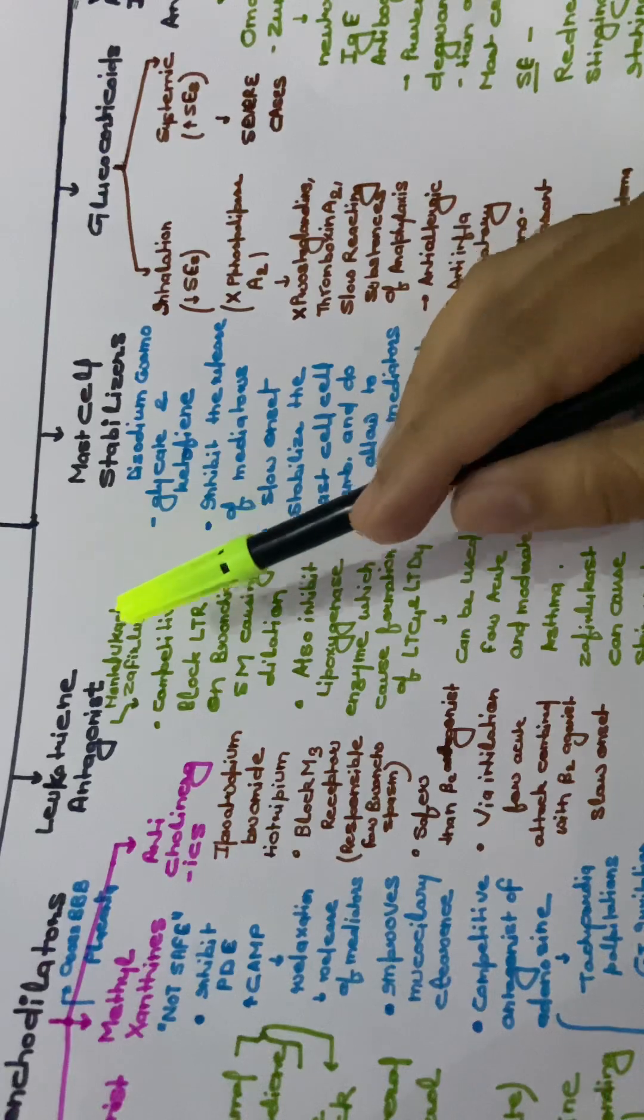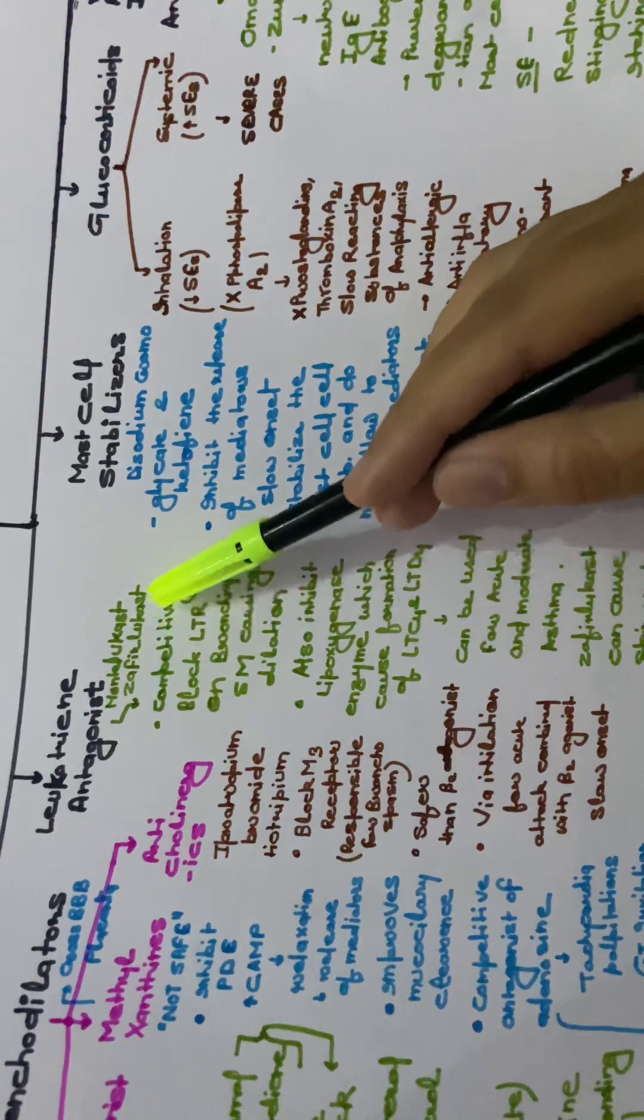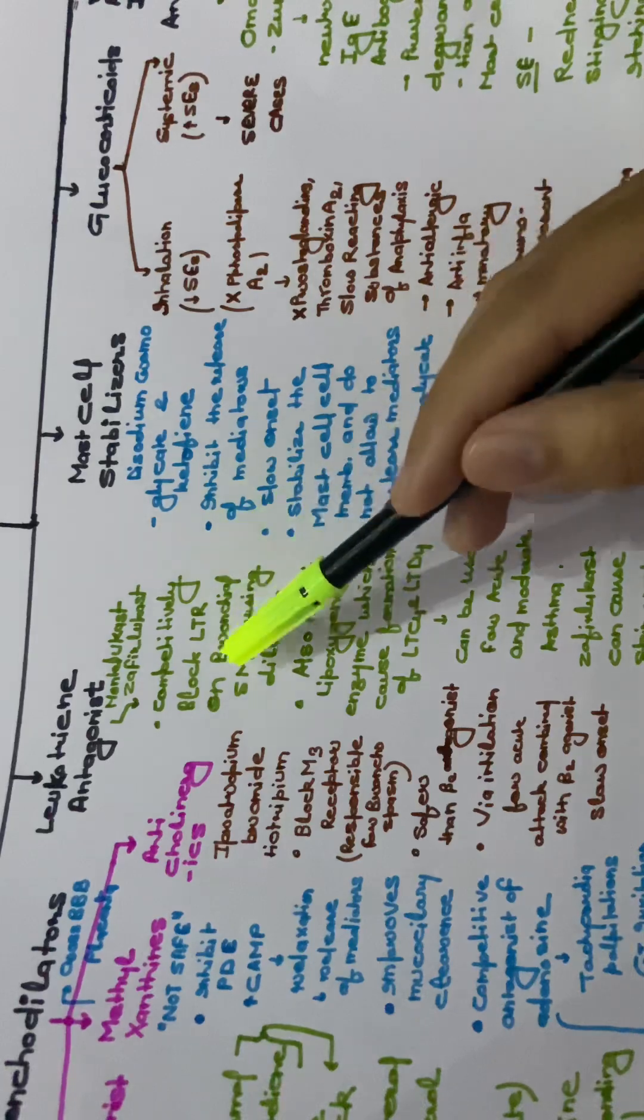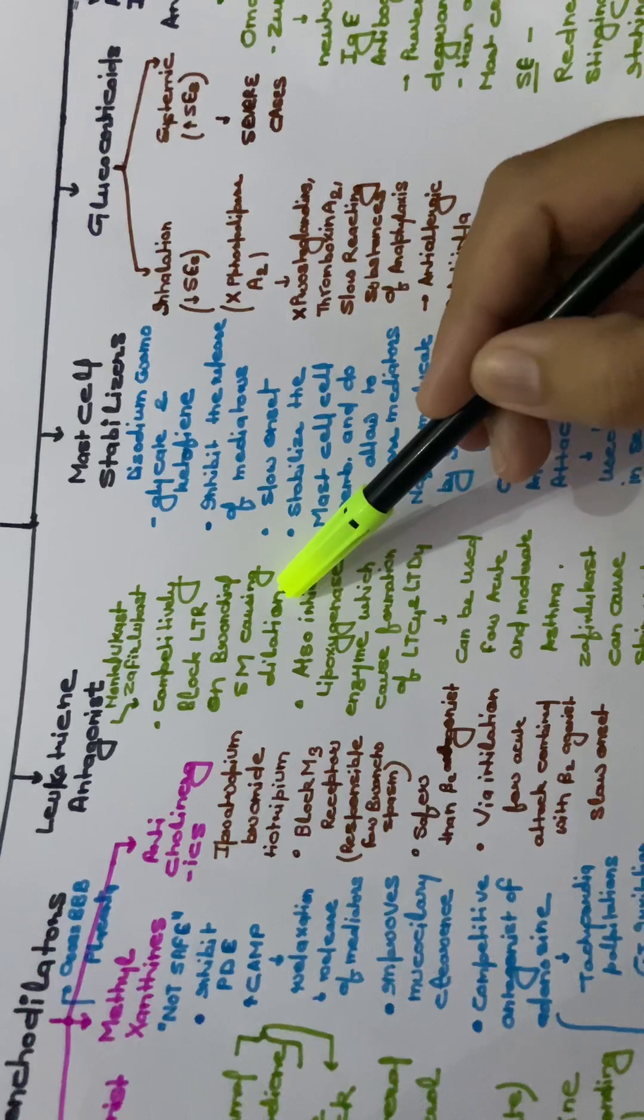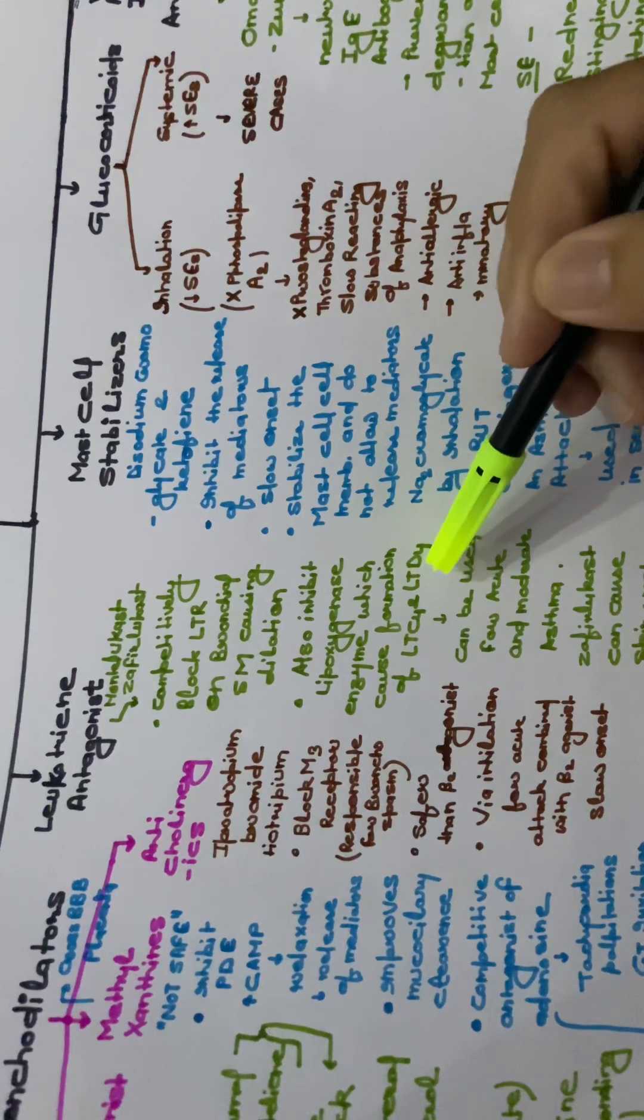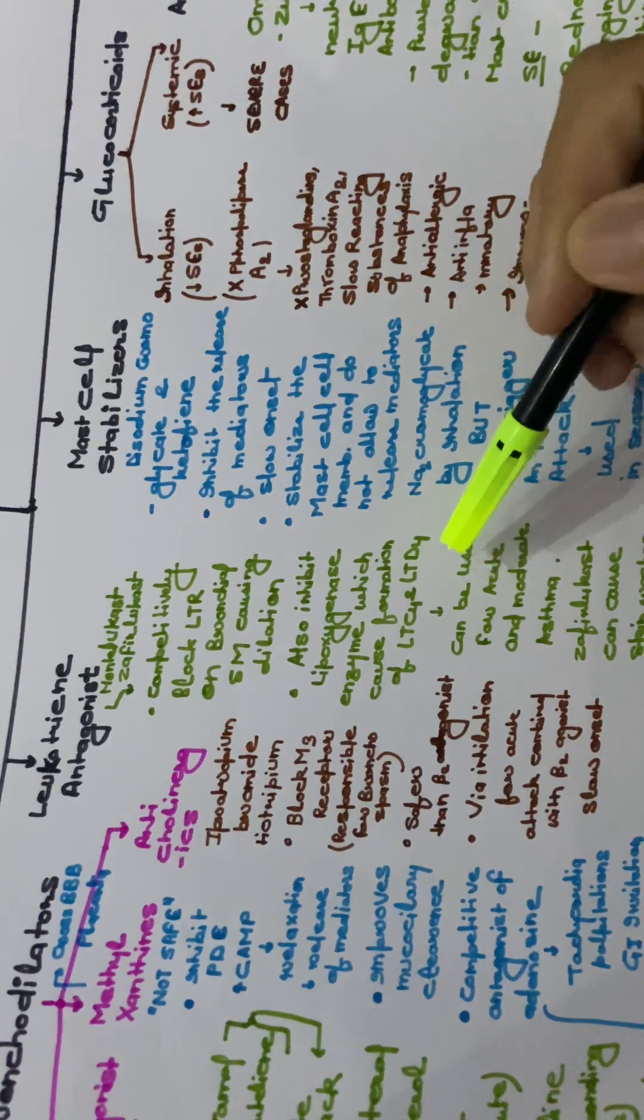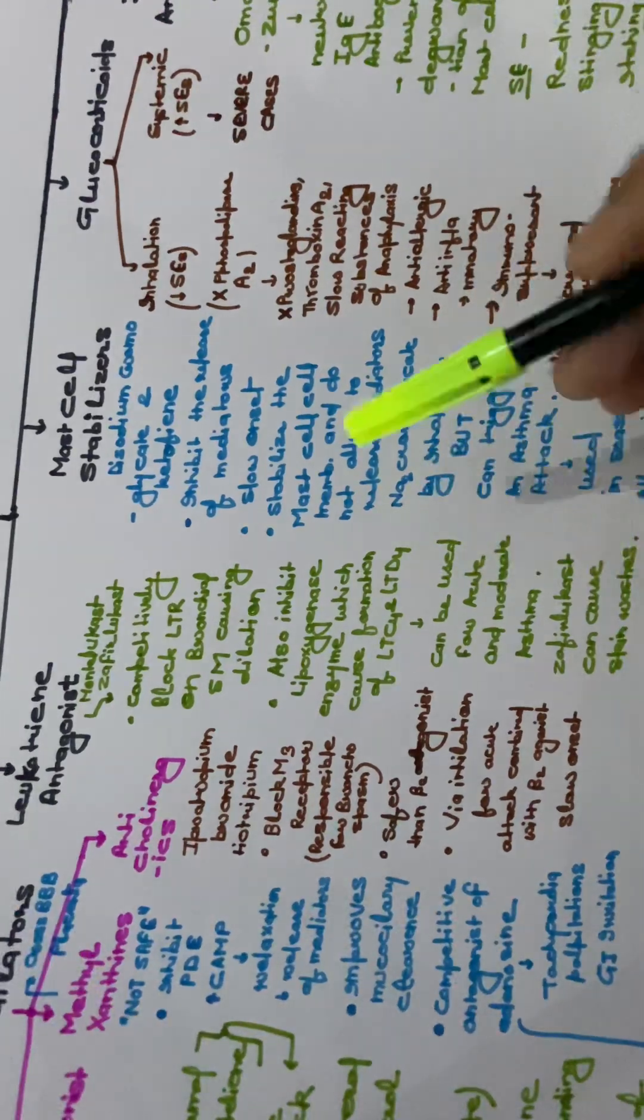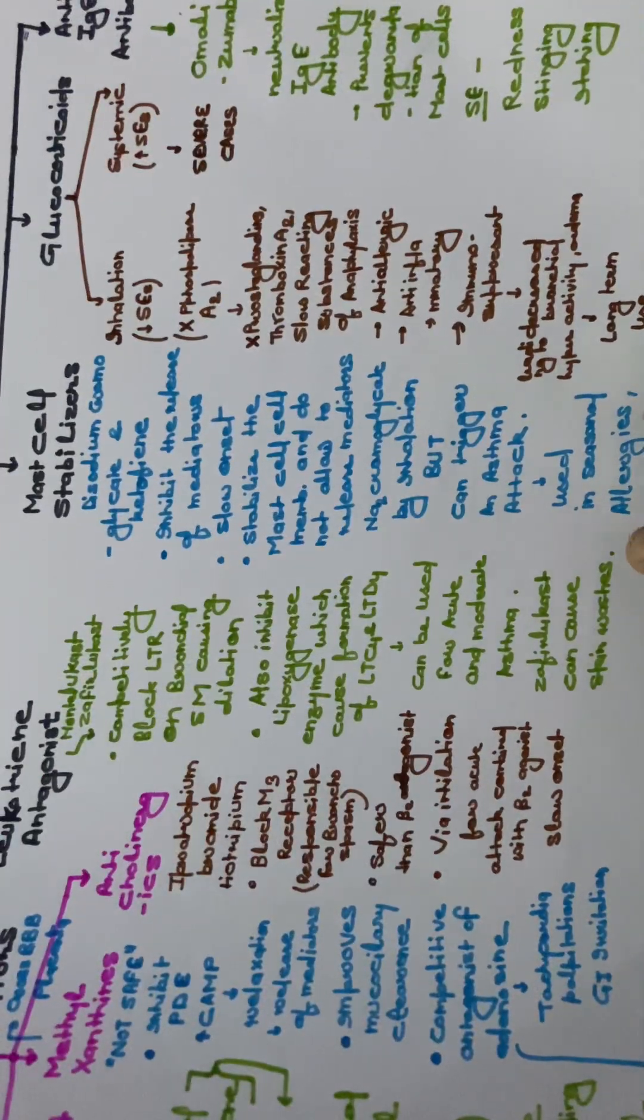Next is leukotriene antagonist. The examples of leukotriene antagonist are montelukast and zafirlukast. They competitively block leukotriene receptors on bronchial smooth muscles causing dilation. They also inhibit lipoxygenase enzyme which causes formation of LTC4 and LTD4, which is leukotriene C4 and leukotriene D4. They can be used for acute and moderate asthma. Zafirlukast can cause skin rashes, that's why it is taken in very less amount.